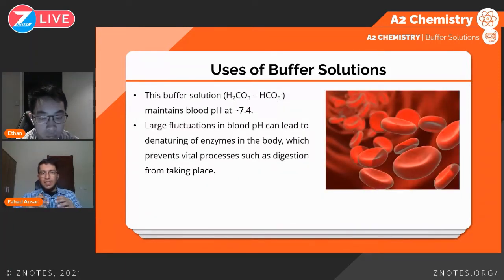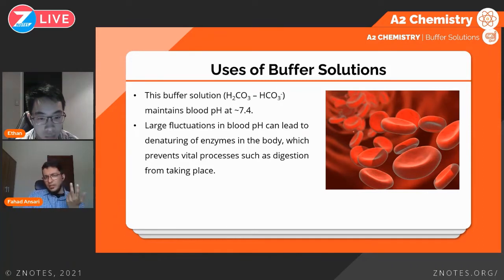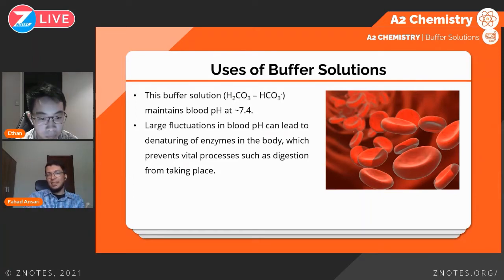This is the use of a buffer solution in human blood. If pH was not stable at around a neutral pH, you could die — simple as that. There are other important uses as well: one use you will study further in A2 organic chemistry is the separation of amino acids, where you need to use a buffer solution. But that's a topic for another day.